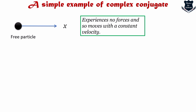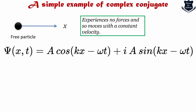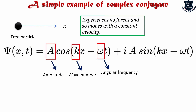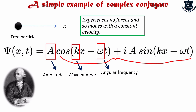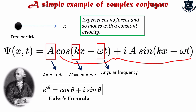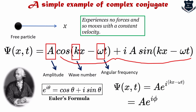For this free particle, the wave function is given by ψ = A·e^(i(kx − ωt)), where A is amplitude, k is the wave number, and ω is the angular frequency. Using Euler's formula — e^(iθ) = cos θ + i sin θ — we can replace the exponential term, giving ψ = A·e^(i(kx − ωt)). This leads to an expression involving a phase angle φ = kx − ωt.